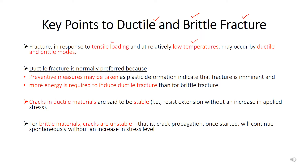Tensile loading at low temperature may result in either ductile or brittle fracture modes. Ductile fracture is normally preferred because if there is sufficient plastic deformation in the material, you can observe that deformation occurring and easily take preventive measures. More energy is required to induce ductile fracture, so if you do not supply external energy you cannot create further plastic deformation and can prevent the component from being fractured. Cracks in ductile materials are generally stable because they resist extension without an increase in applied stress.